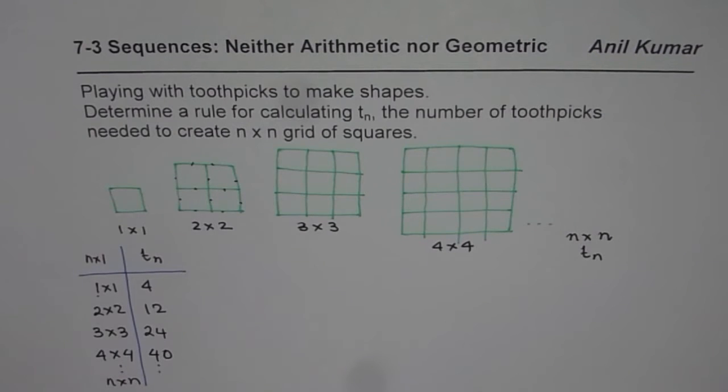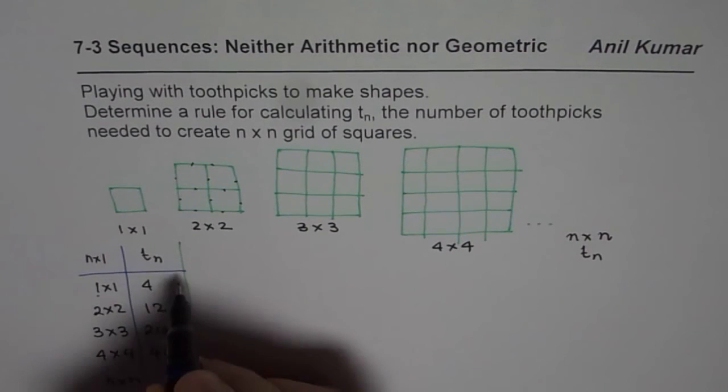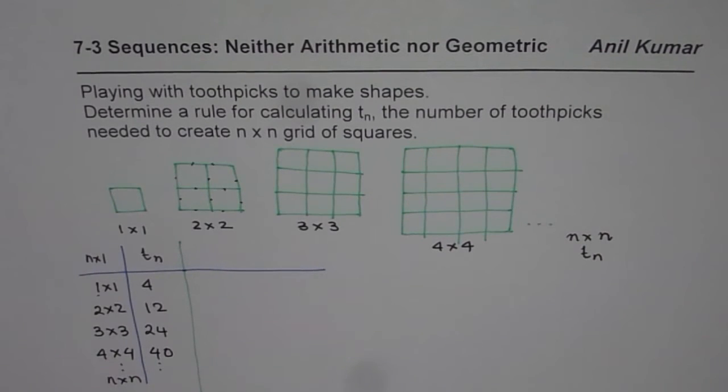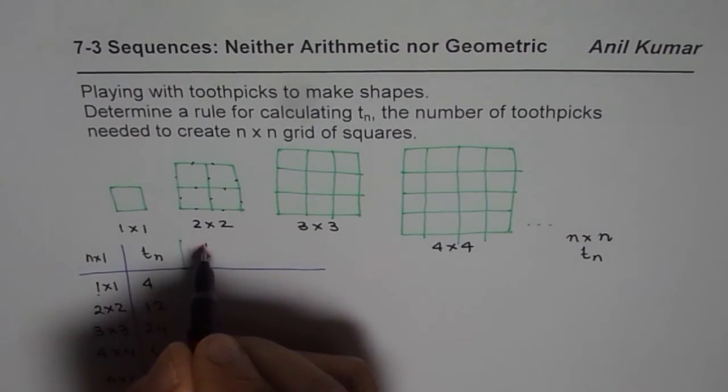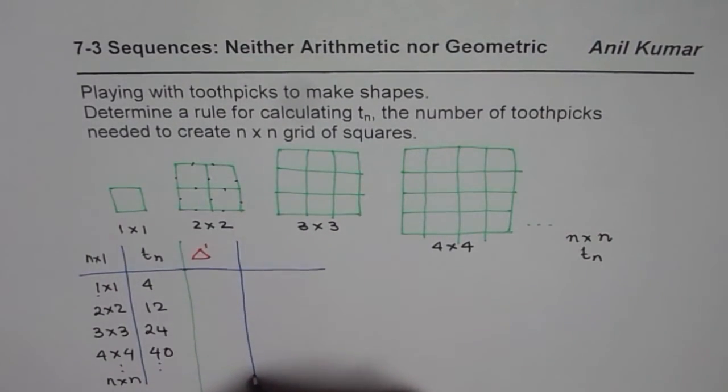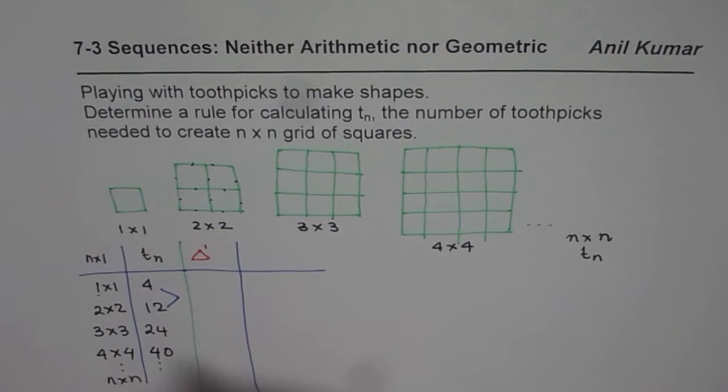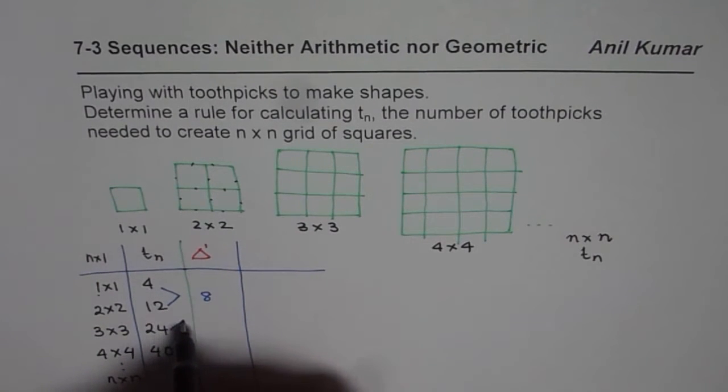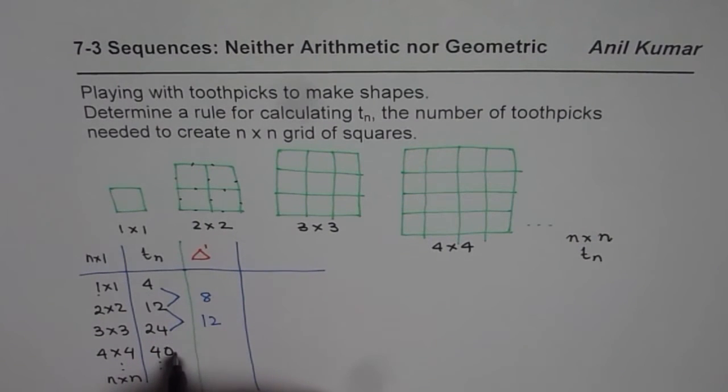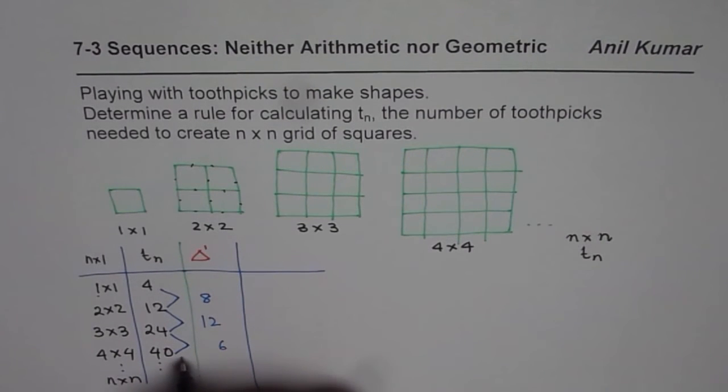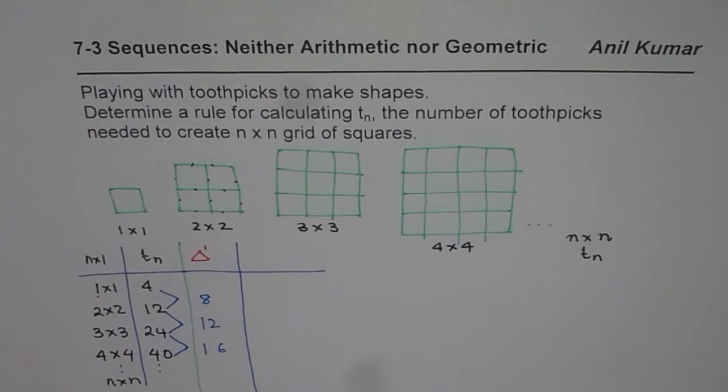One way of course is to find the difference, finite difference. Let me denote this as the first difference. First difference means we will do twelve minus four, which is eight, and then twenty four minus twelve, which is twelve, and then forty minus twenty four, which is sixteen. Clearly the first difference is not constant, so this relation is not linear.